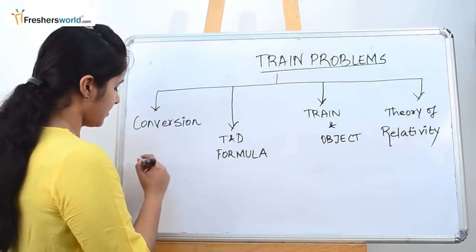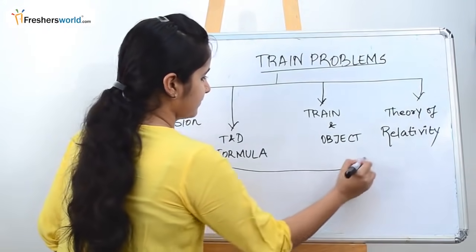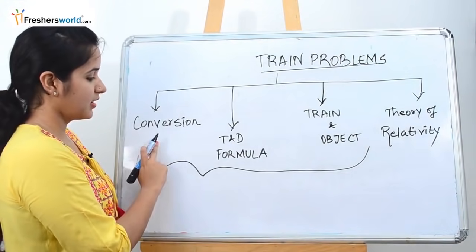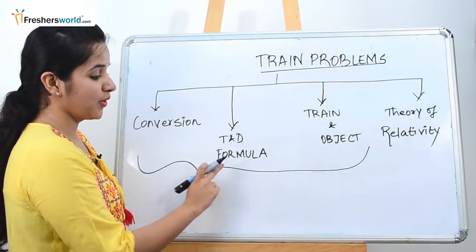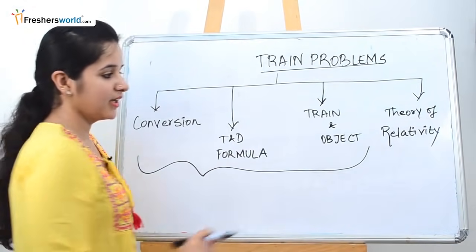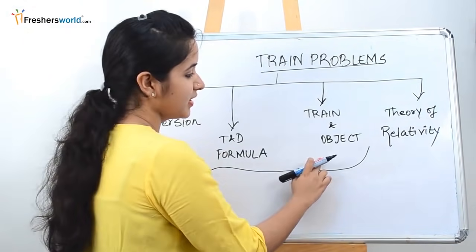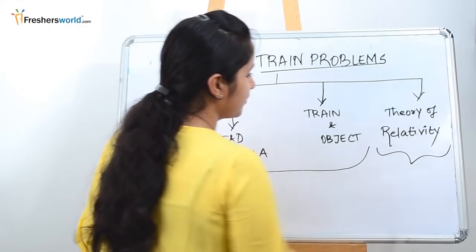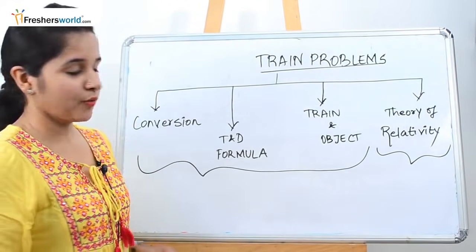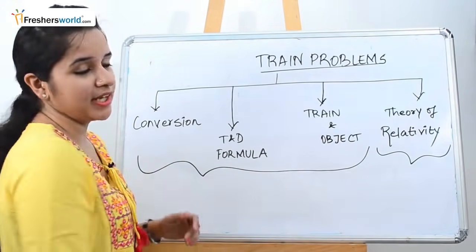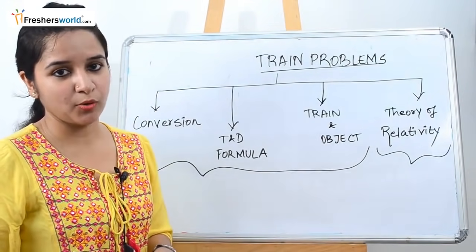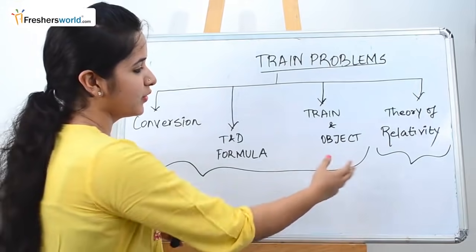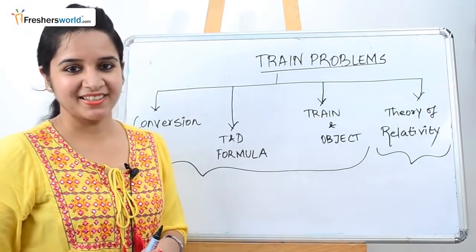Type 1 is conversion. Type 2 is the time and distance formula. Type 3 is train and object, and type 4 is the theory of relativity. In this video we will be covering the first three types of train problems. In the next video we will be covering the theory of relativity. So let's get started.